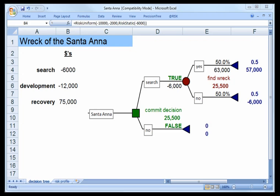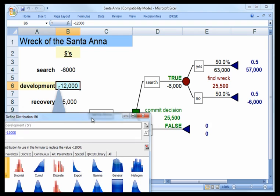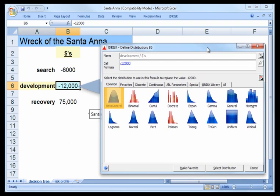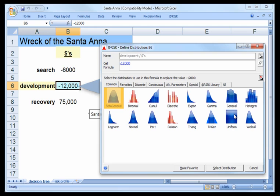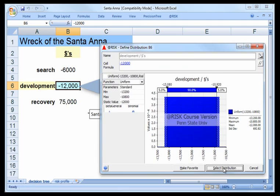Moving now to development, we're told that the cost could run from $4,000 to $20,000 with all values in between equally likely. So again, that implies a uniform distribution, this time between $4,000 and $20,000. So let's click into the box where we want the second input, which is in B6, and go back to at-risk and define distributions again. And again, we're going to ask for a uniform distribution. You can also select distribution, like so.